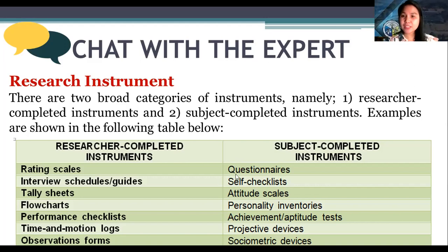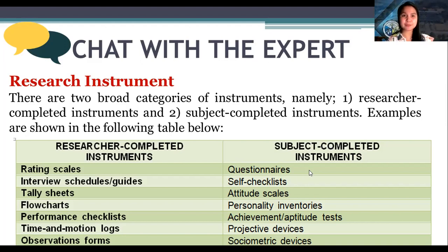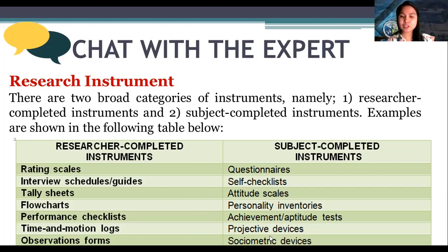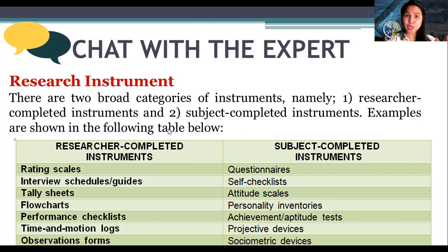Another type is the subject-completed instrument — the most common type. For example, we print questionnaires and distribute them. Examples include: questionnaires on attitude, self-checklists, attitude scales, personality inventories, achievement tests, projective devices, and sociometric devices. When the participant or subject is the one answering, we call it a subject-completed instrument. When the researcher answers the instrument, it's called a researcher-completed instrument.